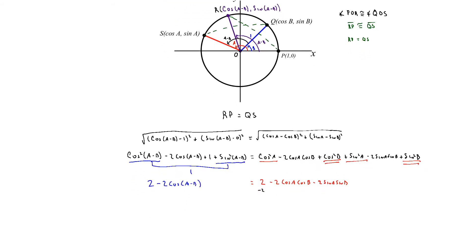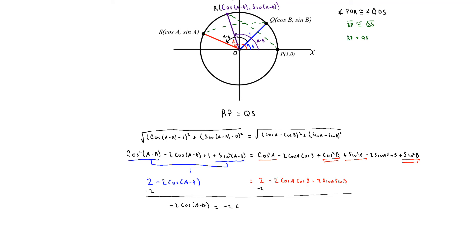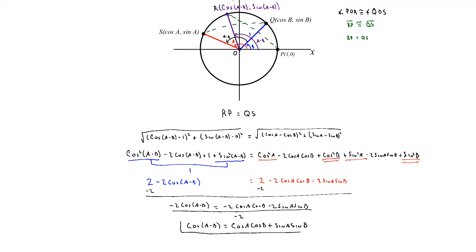We can now subtract the 2's from both sides, so those cancel. We have negative 2·cos(A−B) equals negative 2·cos A·cos B minus 2·sin A·sin B. They all have a factor of negative 2, so we divide everything by negative 2. That gives us cos(A−B) equals cos A·cos B plus sin A·sin B. There's the first formula — the difference formula for cosine.